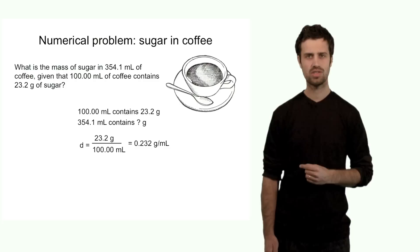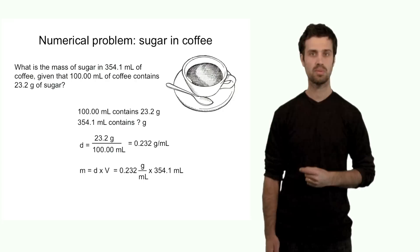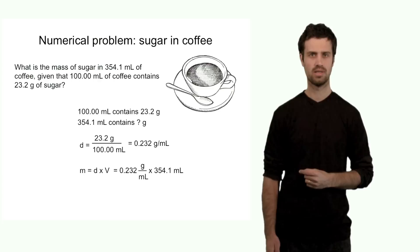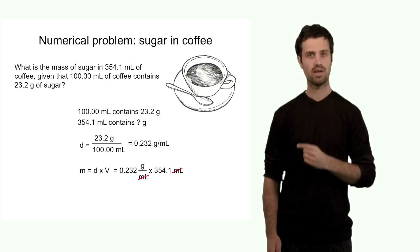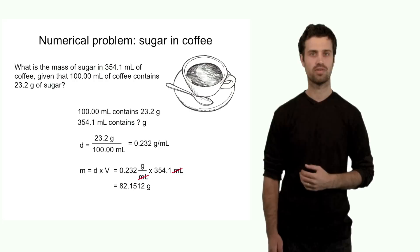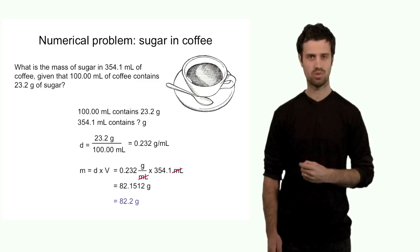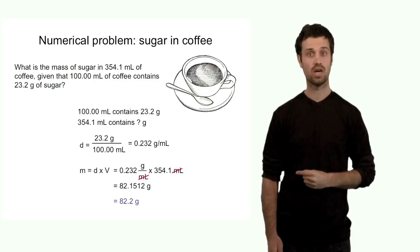If you know this density, you can calculate the mass of sugar for any other volume of coffee, because mass equals density times volume. For the new volume: 0.232 grams per milliliter times 354.1 milliliters. Note that milliliters appears both in the numerator and denominator, which means it cancels out. The answer is therefore in grams, which is the correct unit for mass. The answer is 82.15 grams, or expressed with the correct number of significant figures — three significant figures — 82.2 grams. I was checking my answer along the way by looking at how the units cancel.